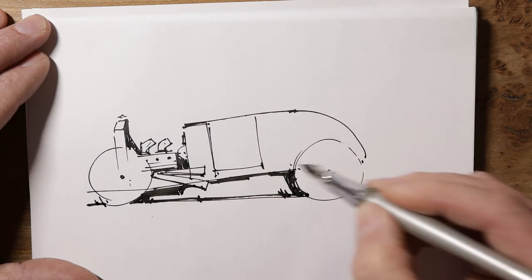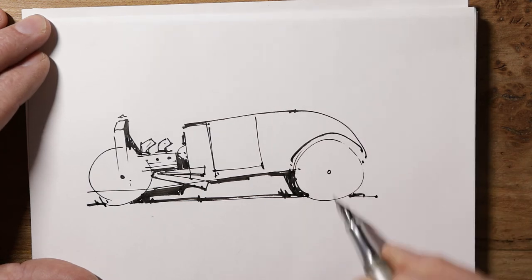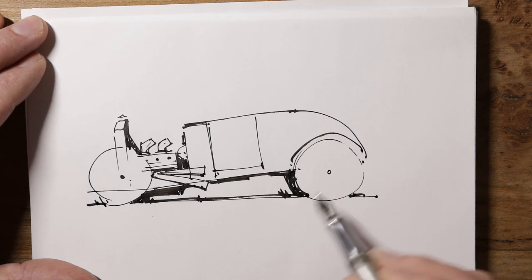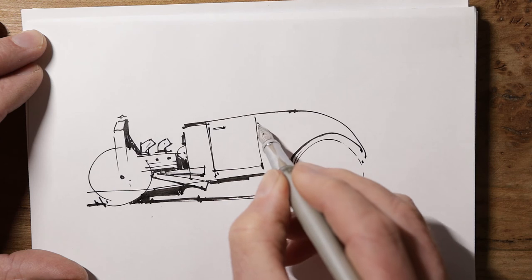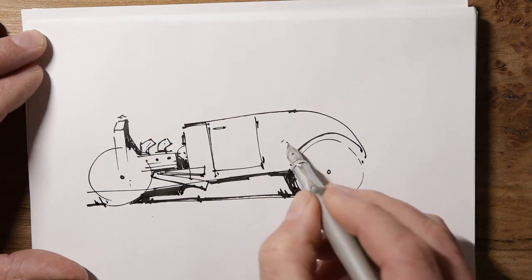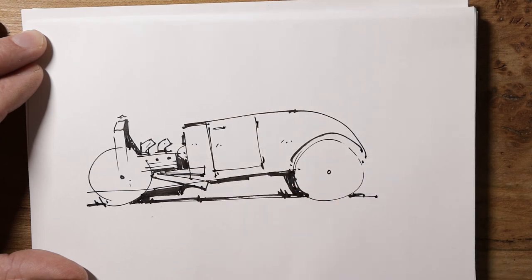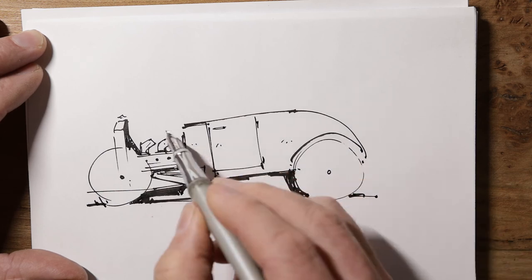And then I'll put an arch like that there because the metal is kind of pressed in at that point where the wheel, the fender would normally go. And we'll put the door handle, some hinges, a few scuffs. There's the bottom part of the car.